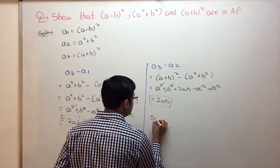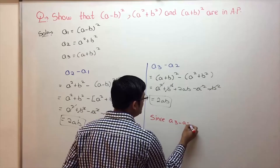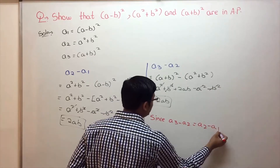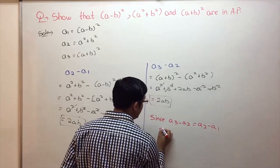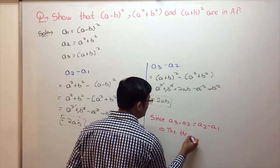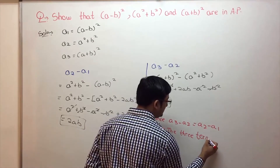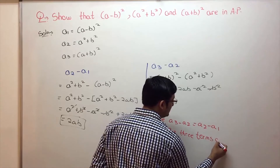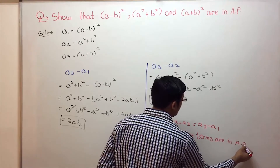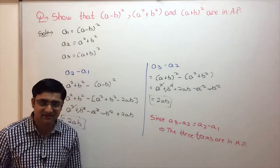Now check: here we get 2ab and here also we get 2ab. Since a3 minus a2 equals a2 minus a1, this implies the three terms are in AP, because the difference between consecutive terms is the same.